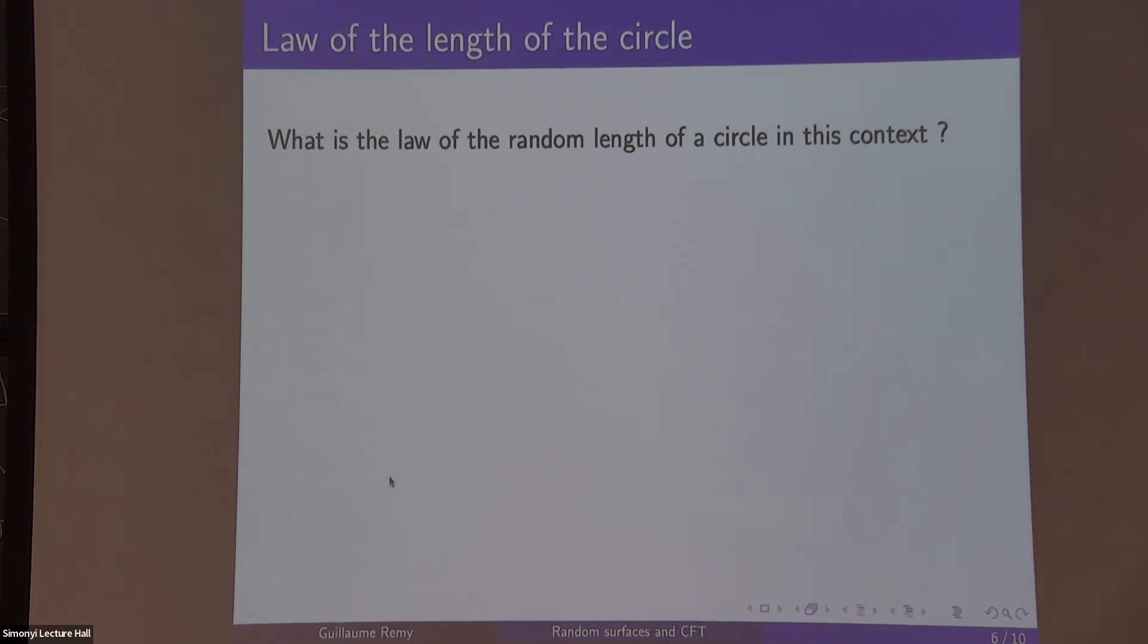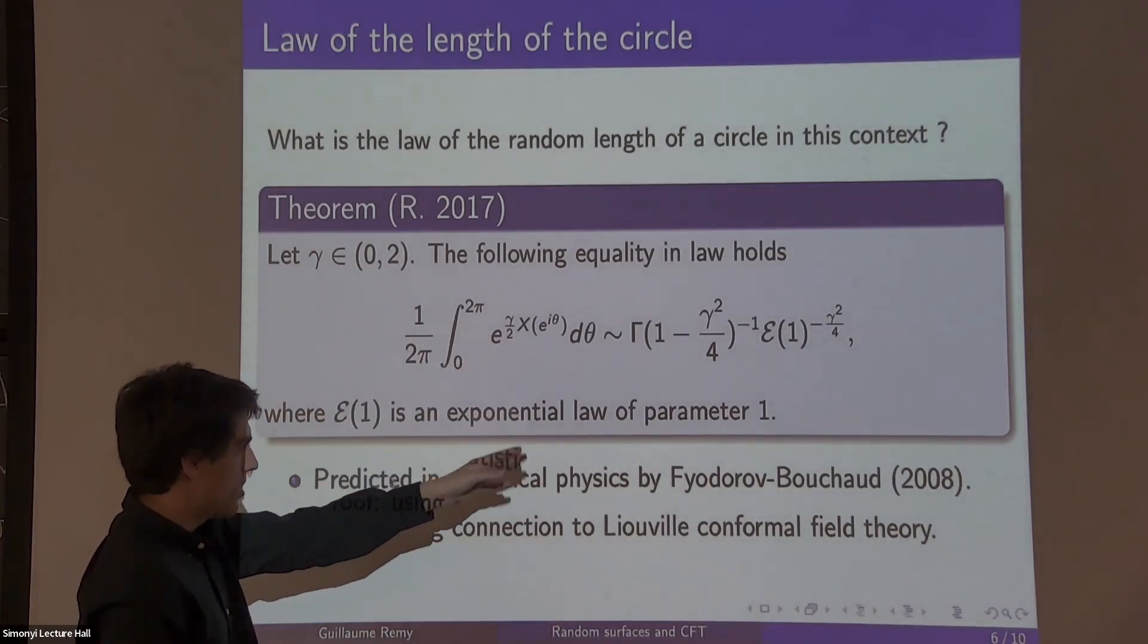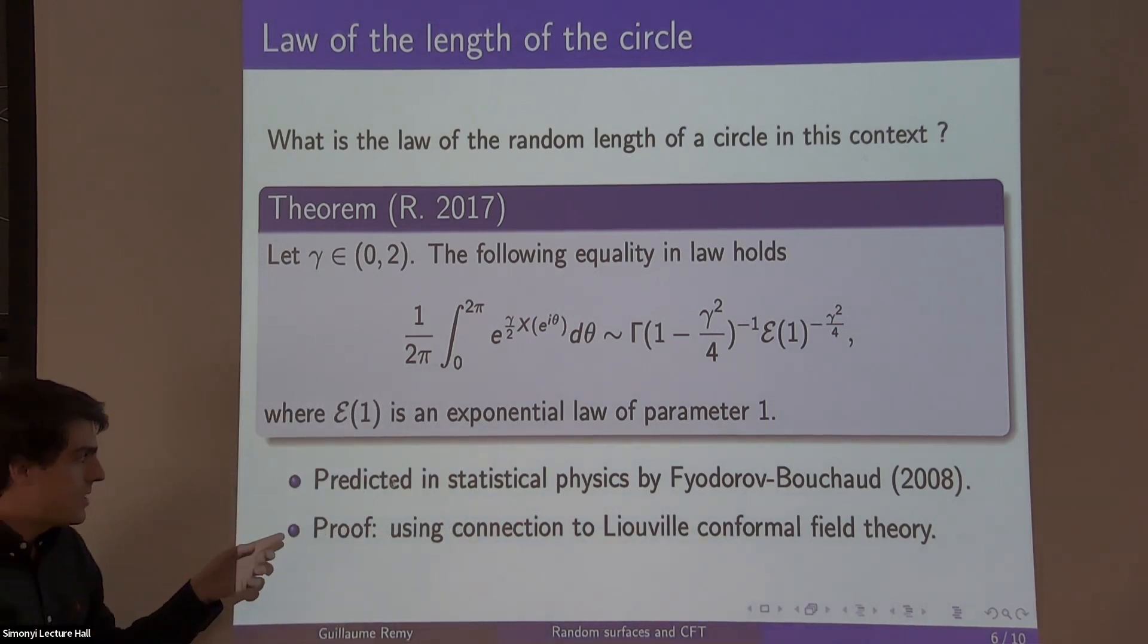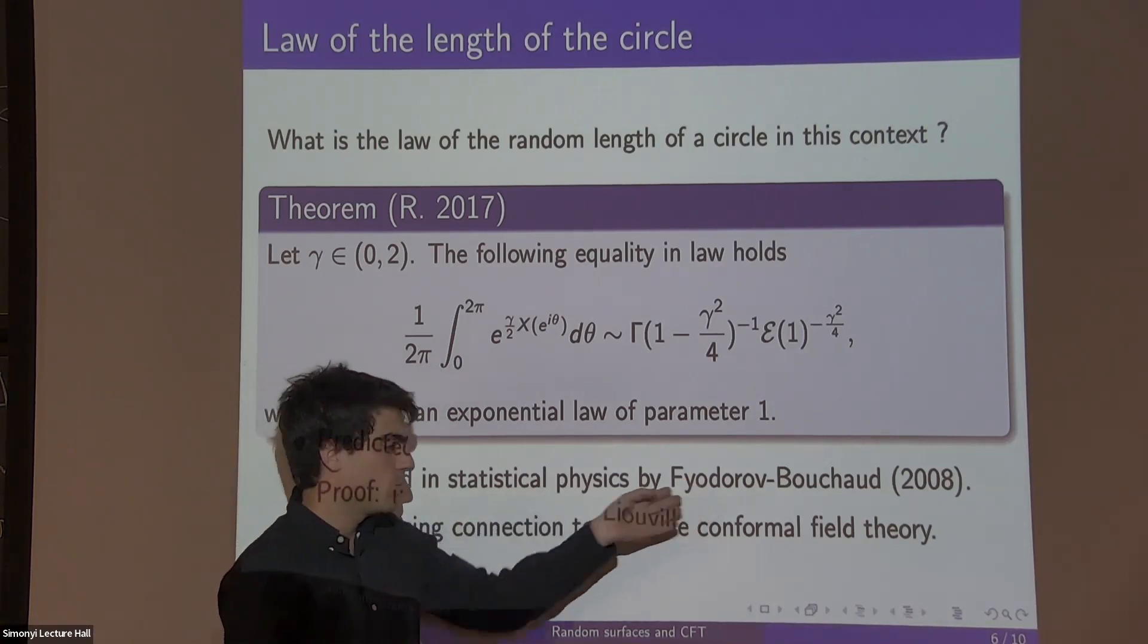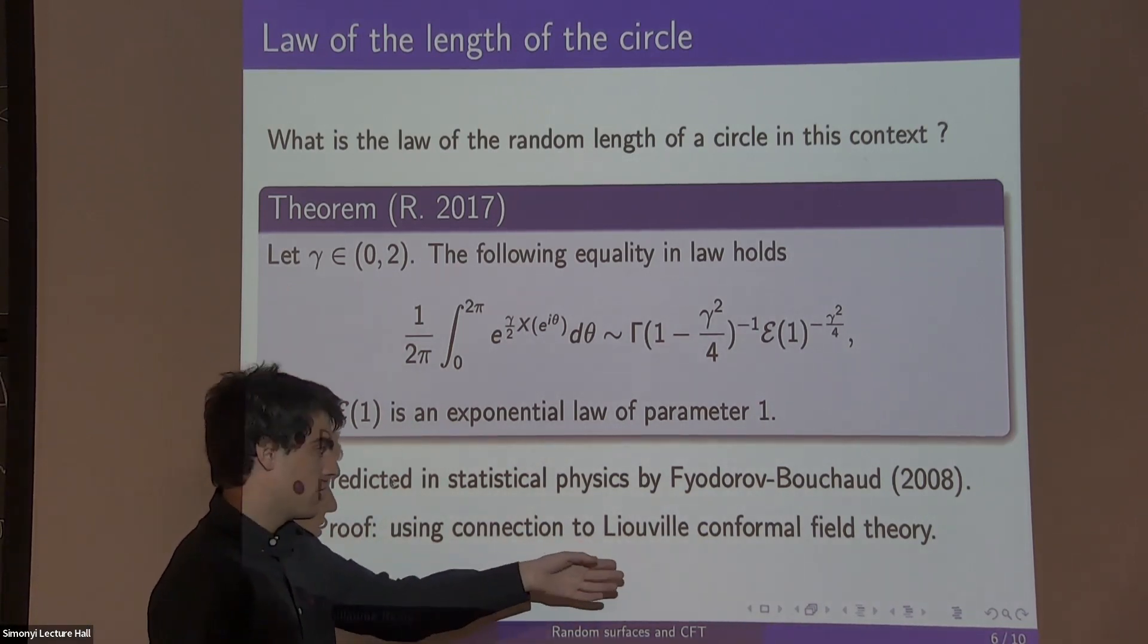So let's try to prove some theorems on this object. A very natural question is, if you take the unit circle and measure its length with this random measure, you get a random variable. What is the law of this random length? This result gives the answer: the total length of the circle is, up to constant, just an exponential random variable, parameter one to some power. This was predicted in physics by Fyodorov and Bouchaud.